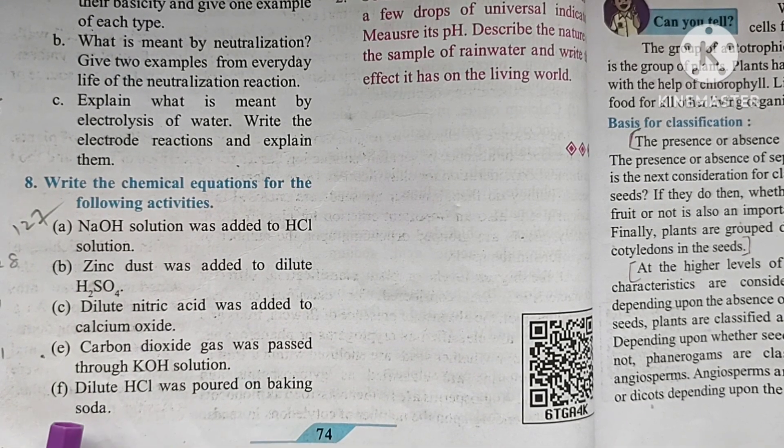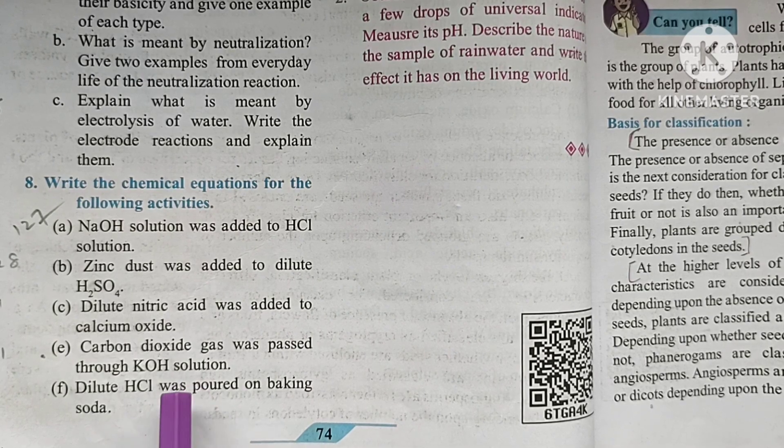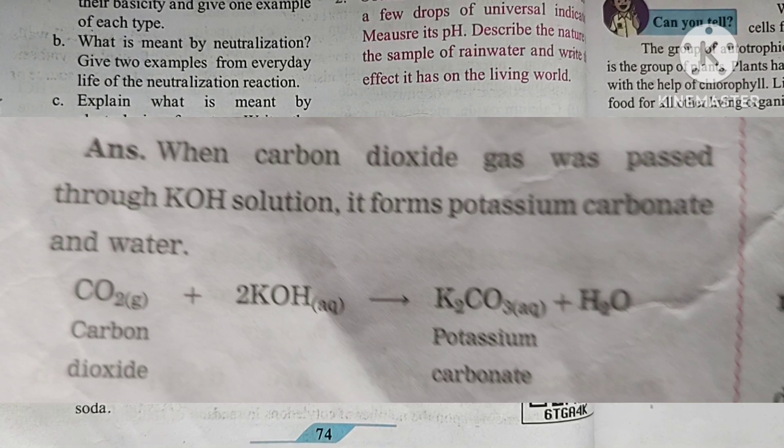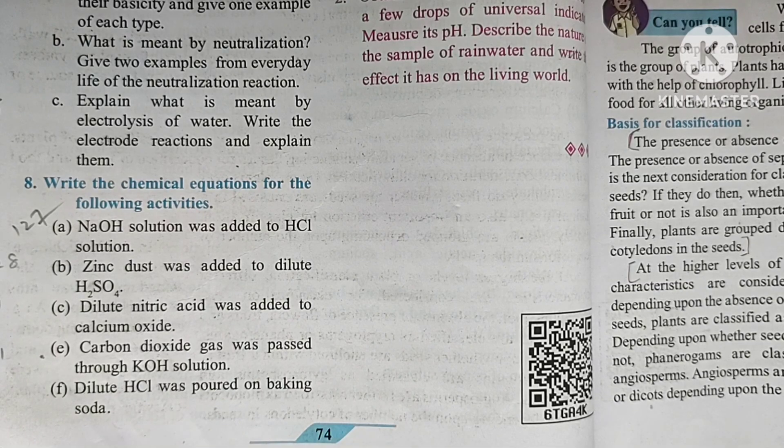Part E: Carbon dioxide gas was passed through KOH solution. I will write. Part F: Dilute HCl was poured on baking soda.